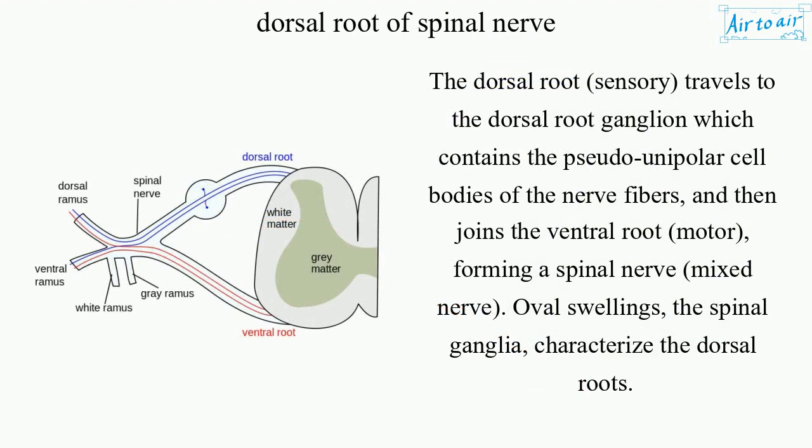The dorsal root, sensory, travels to the dorsal root ganglion which contains the pseudo-unipolar cell bodies of the nerve fibers, and then joins the ventral root, motor, forming a spinal nerve. Mixed nerve oval swellings, the spinal ganglia, characterize the dorsal roots.